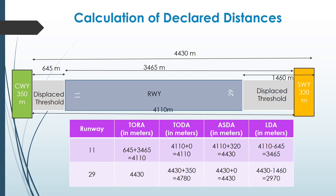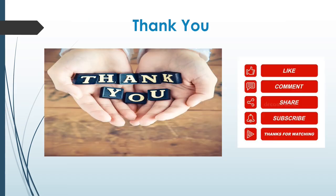So this is the calculation of all four declared distances associated with runway 11/29. You will be amazed to know that you have just calculated the declared distances of runway 11/29 of Delhi International Airport, other than the clearway of 350 meters which was added for your understanding. I hope you are clear with the concept of declared distances. Do like, share, and subscribe if this video helped you, and let us know in the comments below what more videos you'd like to watch. Do visit our website aviationabbey.com — go where you feel the most alive.